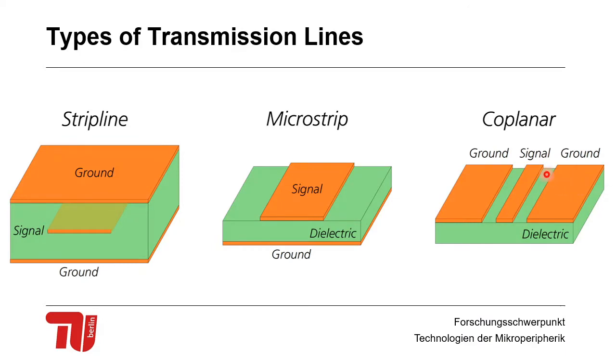Here you see that we will guide our fields in between the signal and the ground layer. What you could also have is a ground on the bottom which would then be called a grounded coplanar. Then we would have to connect these grounds with vias to the ground on the bottom.